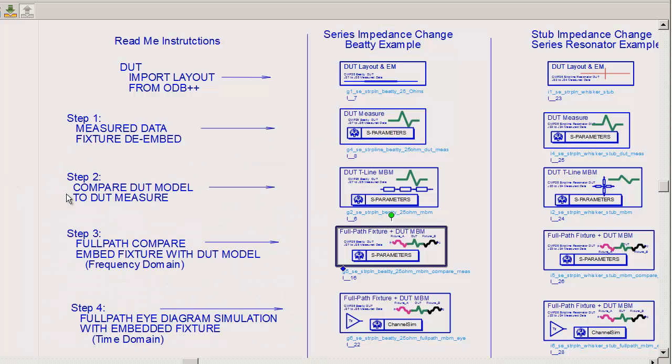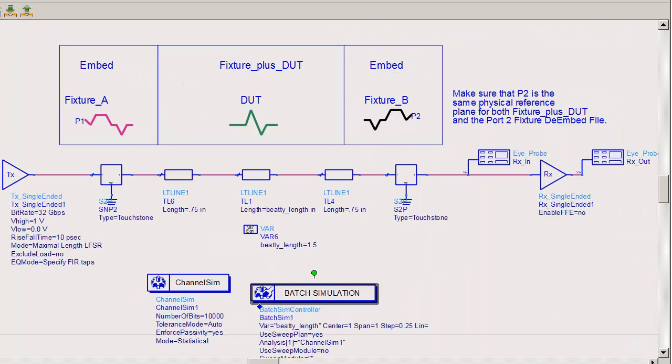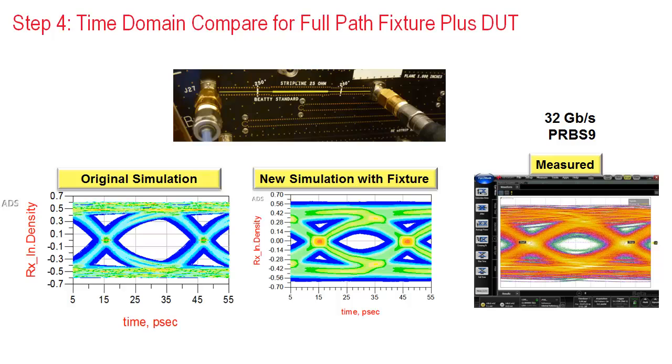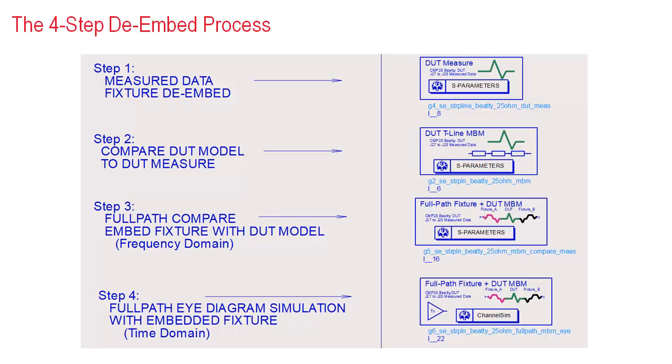The final step four is to run the actual digital waveform through the full-path fixture plus DUT PCB structure and demonstrate the improved simulation to measurement correlation compared to the original simulation.